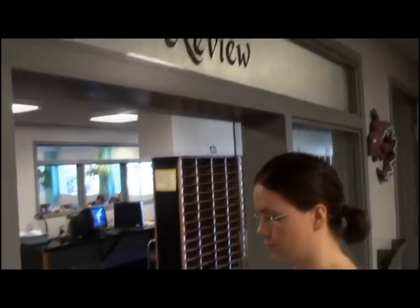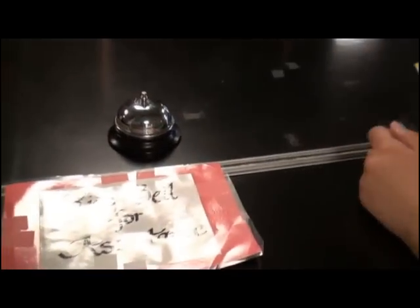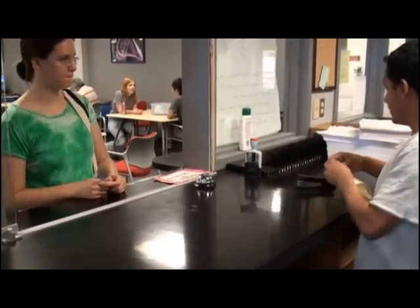The poster next to the test review window in the Tutoring Center explains the process of reviewing your quiz. Fill out a yellow form and then call the tutor by ringing the bell. You'll need a photo ID to check out your quiz. Your quiz is filed by section number, so you'll need to know what section you're in.